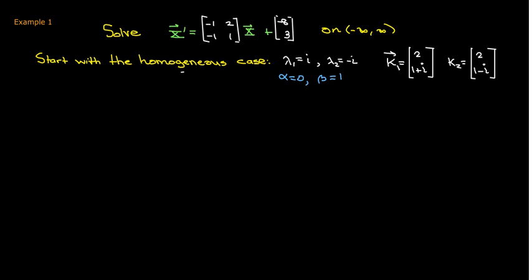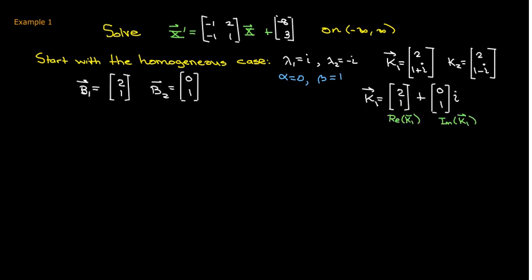And so I can plug that into the formula which means that that formula had an e to the alpha t so e to the 0 would just be 1. So that will not appear in our formula. What we do need is the real part and imaginary part of our first eigenvector. So to make it clear we could break up our eigenvector into the real part and then the coefficients on i.